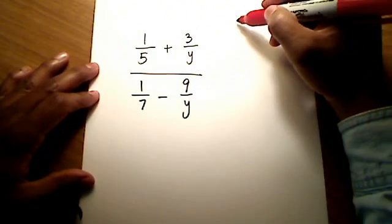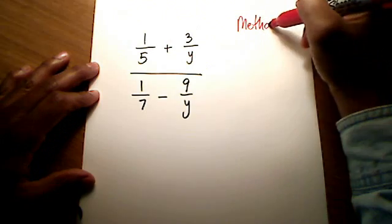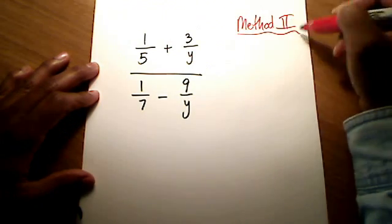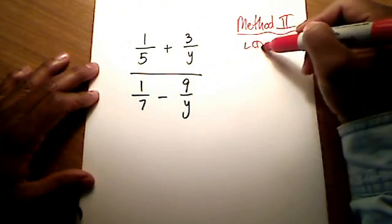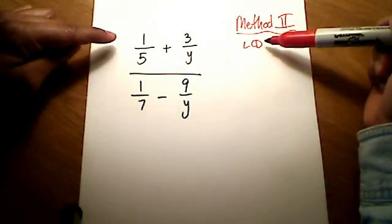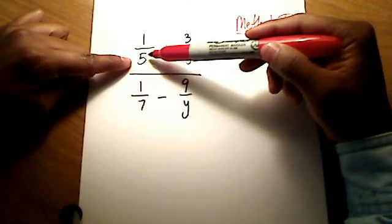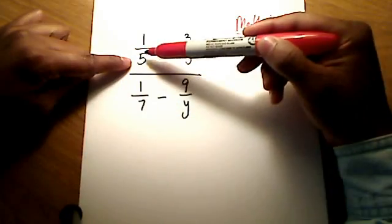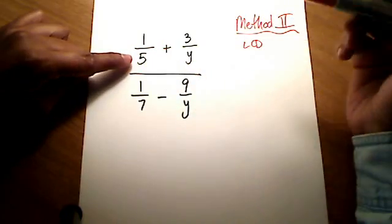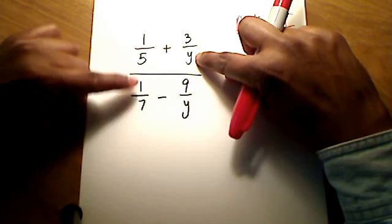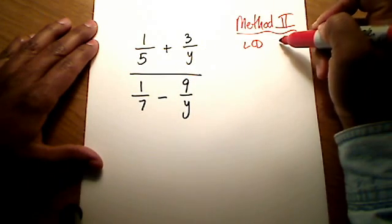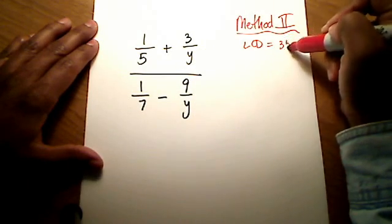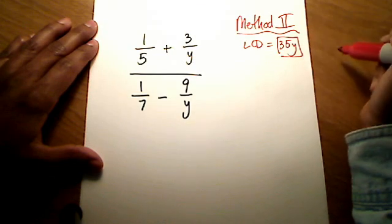You'll see that I'm going to jump straight to my answer here in no time at all. OK, so the first step in method number two, call it method two, is to first find an LCD. So, but this one here, this LCD that I'm looking for is the LCD of all four of these fractions. Do you see that there are four fractions? And I need to find the LCD for all four of these fractions. So, out of 5 and y and 7 and y, I hope you see that the LCD is 35y. That's my LCD.